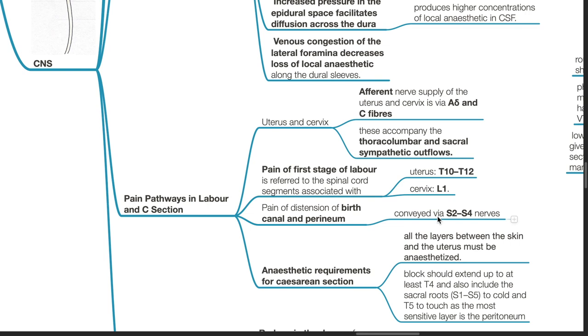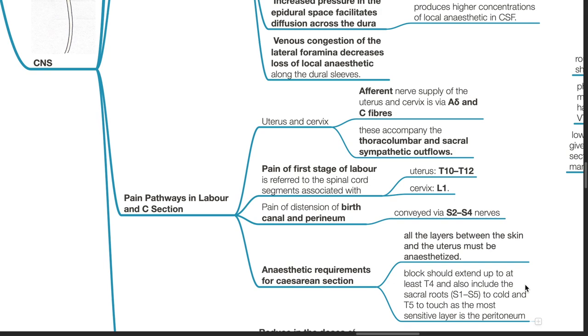Anesthetic requirements for cesarean section: All layers between the skin and the uterus must be anesthetized. The block should extend up to at least T4 and include sacral roots S1 to S5 to cold and T5 to touch, as the most sensitive layer is the peritoneum.